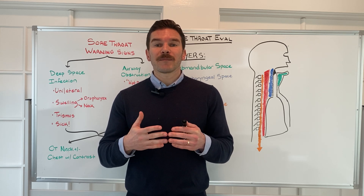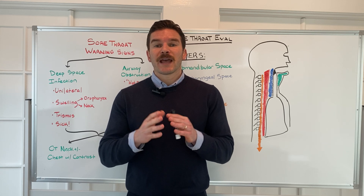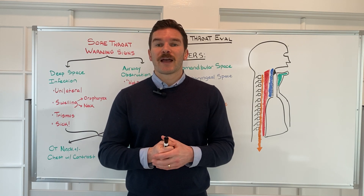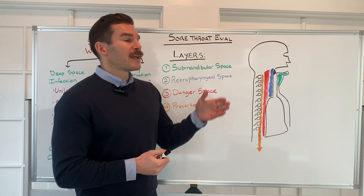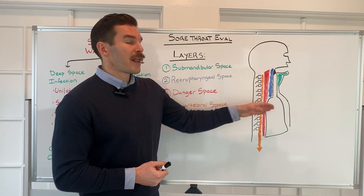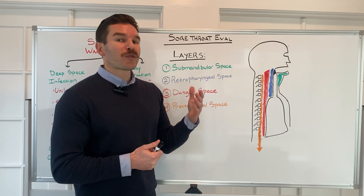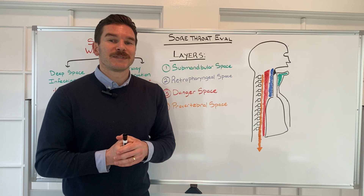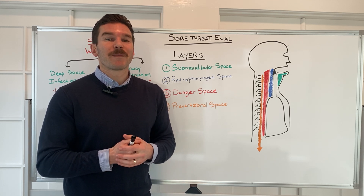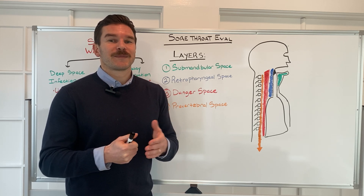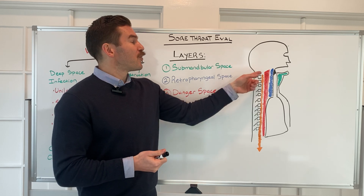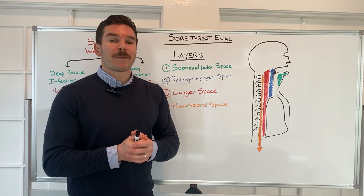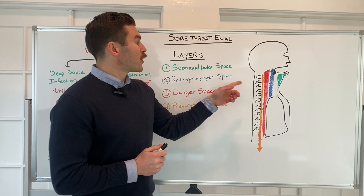First, let's take some time to understand the anatomy of the oropharynx, the retropharyngeal space, and the other structures that can be involved when run-of-the-mill sore throats progress to more serious underlying infections. We'll look at a sagittal view of the head, neck, and thorax. This is where our first food comes in — onions. If you've seen Shrek, you remember that ogres have layers just like onions, and in the same way, the structures of our head and neck also have layers that play a significant role in understanding the potential complications of a throat infection.